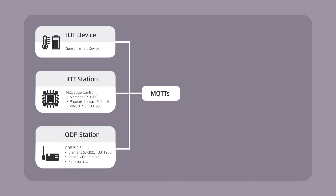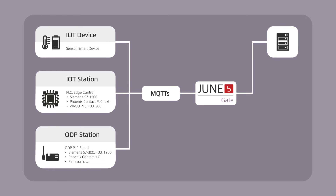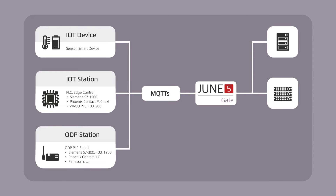This data, which is decentralized, collected and secured for transmission, is now transferred to the Jun5GATE service. This is installed where it's best for your application — for example in your server room, in your data center, or on a cloud server.